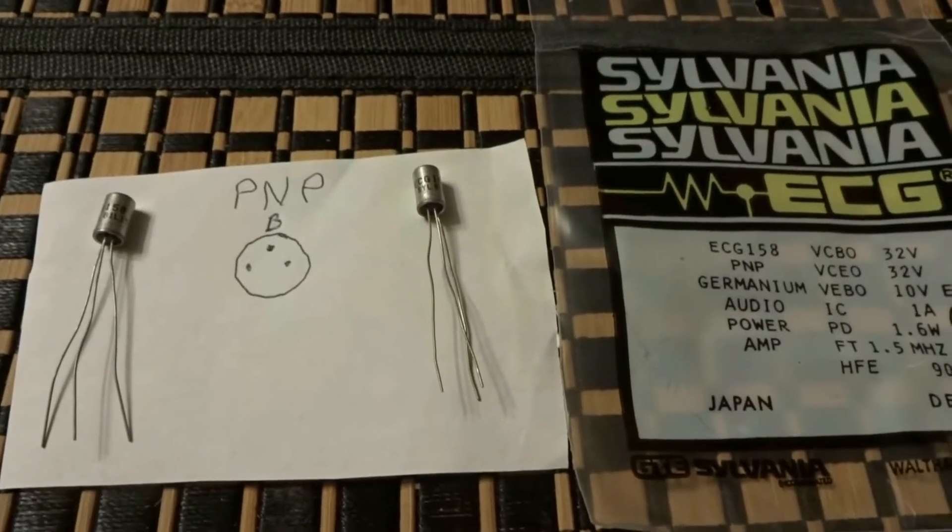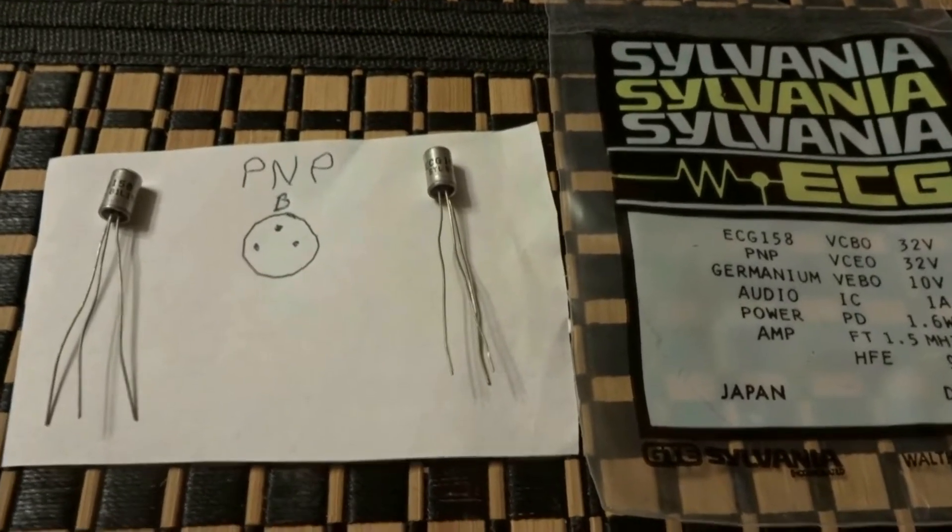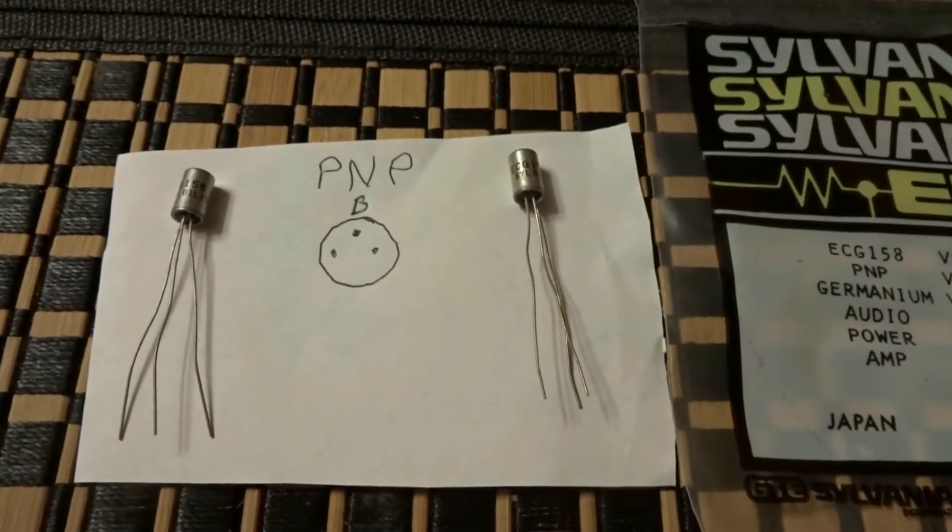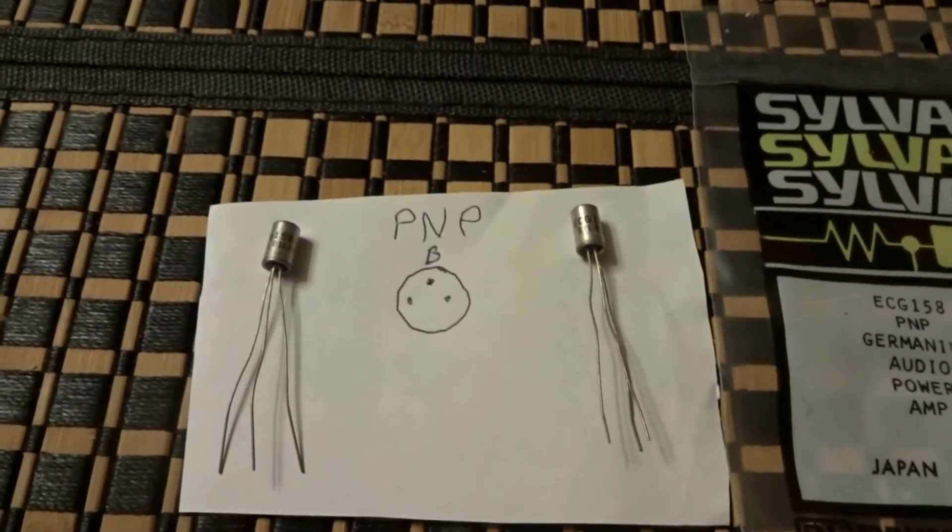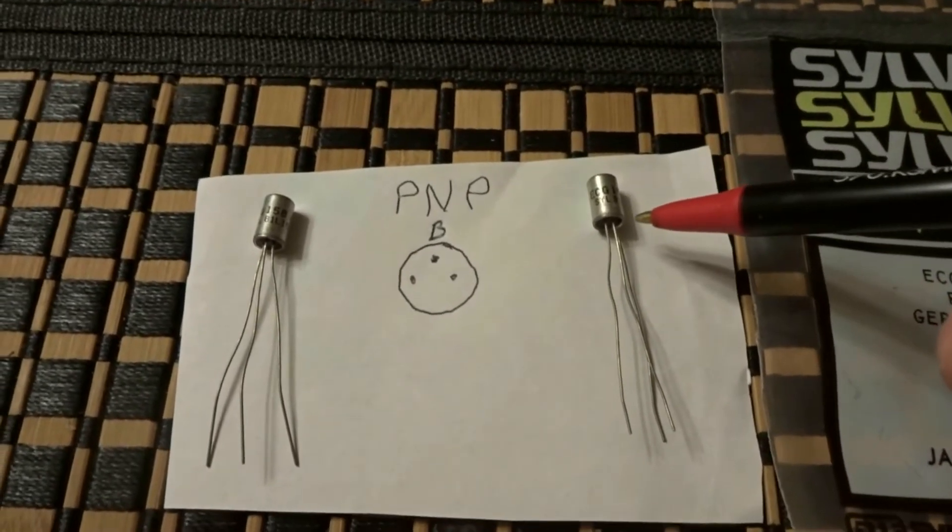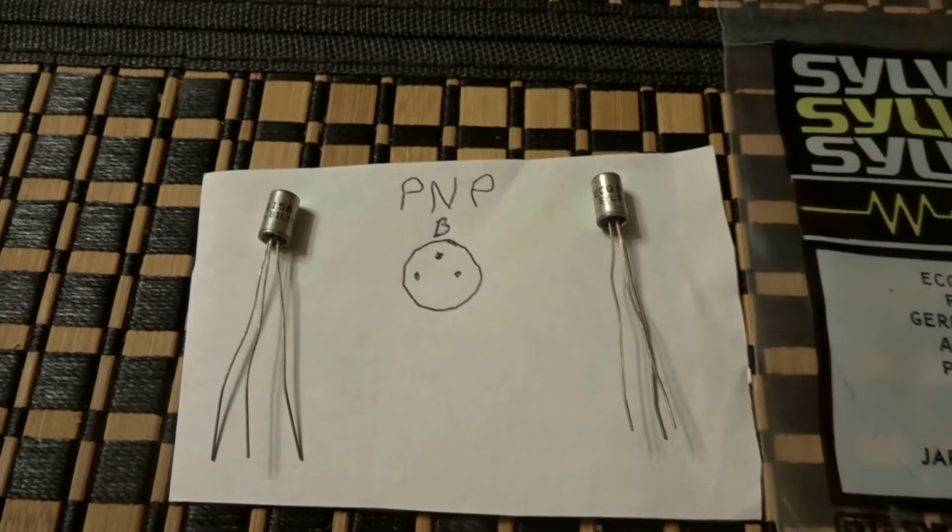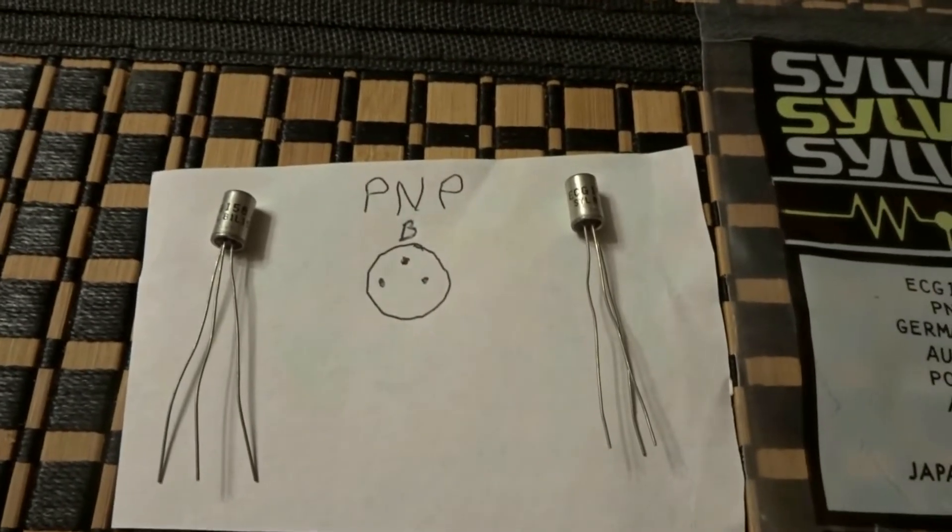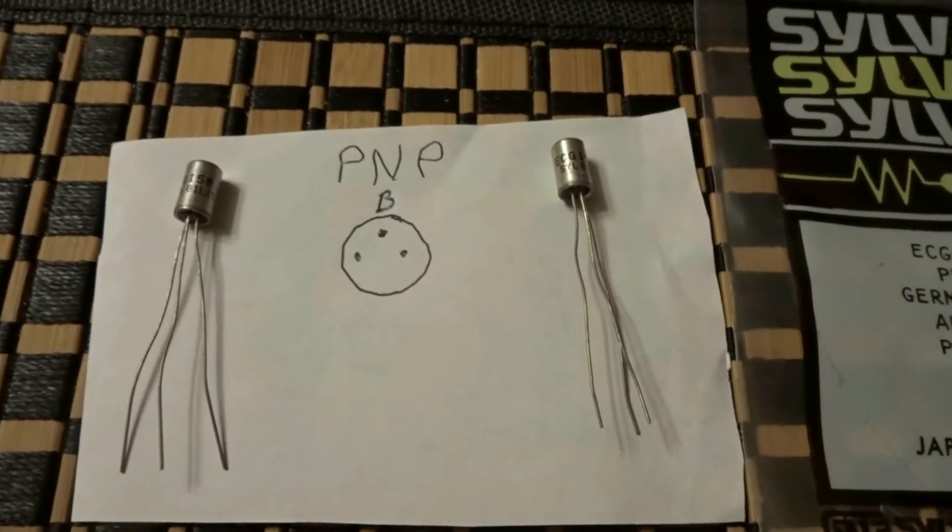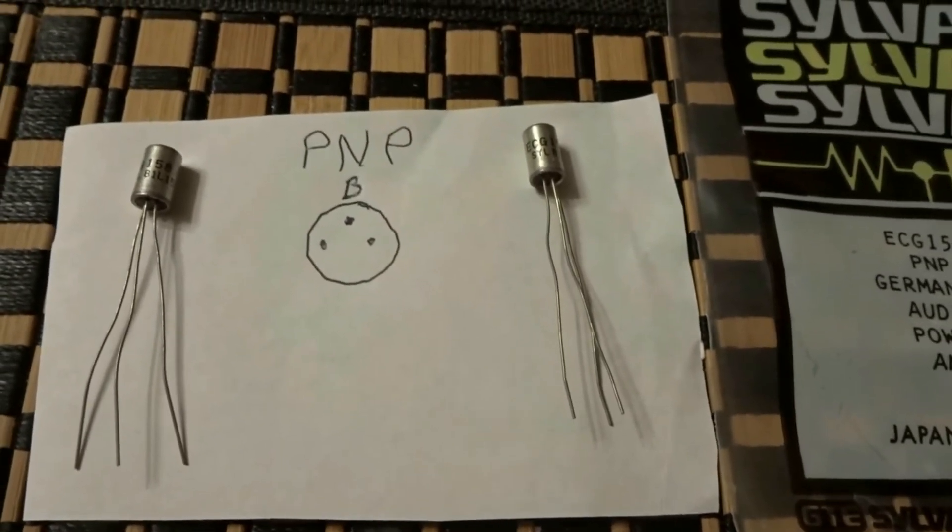What's up guys, today I wanted to show you how to identify when you run across a transistor. If you followed my fuzz face build, you'd know that these metal cans usually have a little tab pointing to the emitter, and usually that's the way it is. The tab points to the emitter pin out.